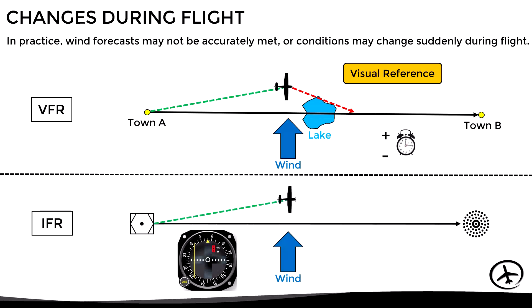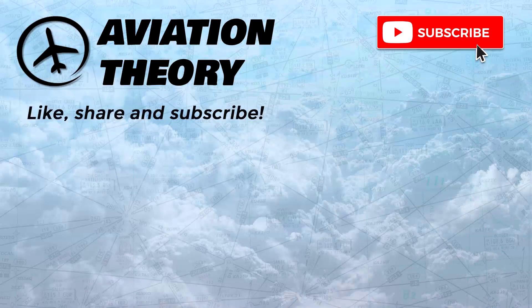In IFR flights, we use navigation instruments such as a CDI to identify and correct deviations. A useful method to quickly determine the drift angle and calculate the required corrected heading is the 1-in-60 rule, which will be discussed in detail in the next video. I hope the information presented in this video was useful — if so, don't forget to share, like, subscribe, and leave a comment below. Thanks for watching.